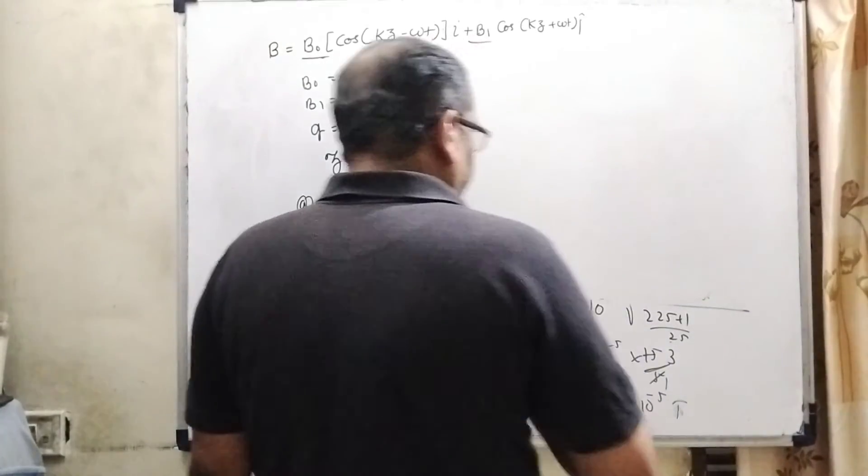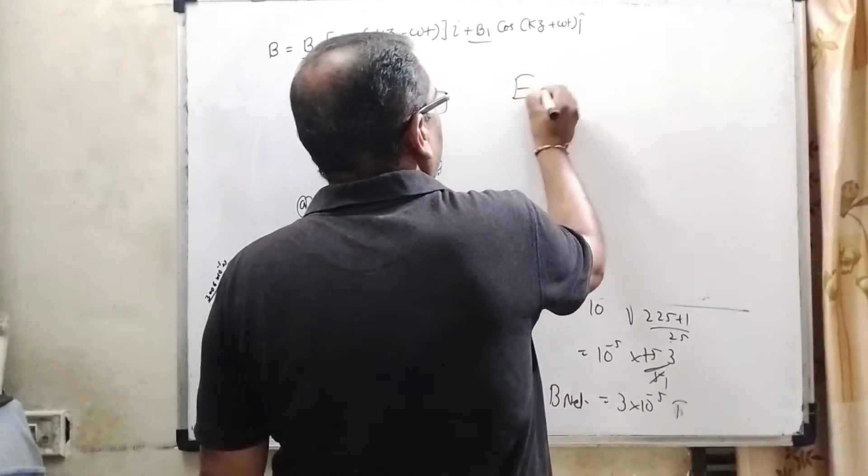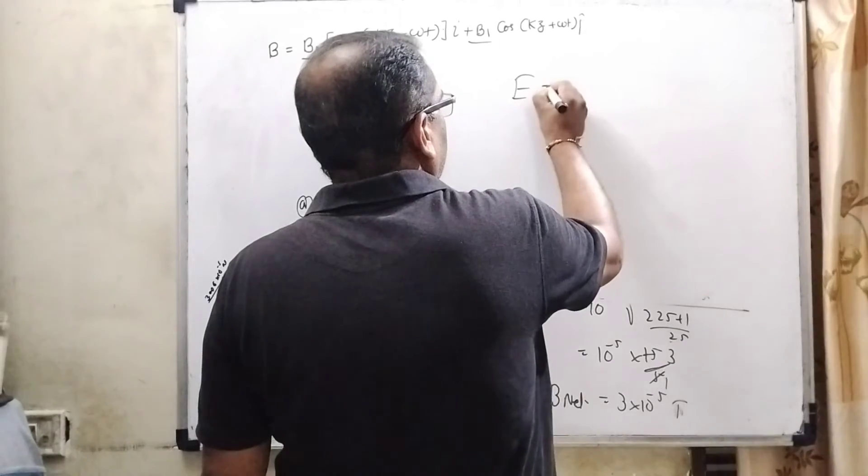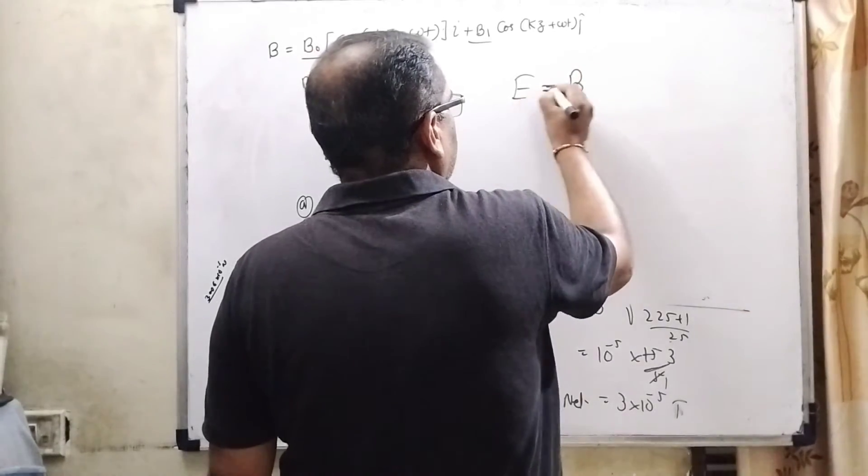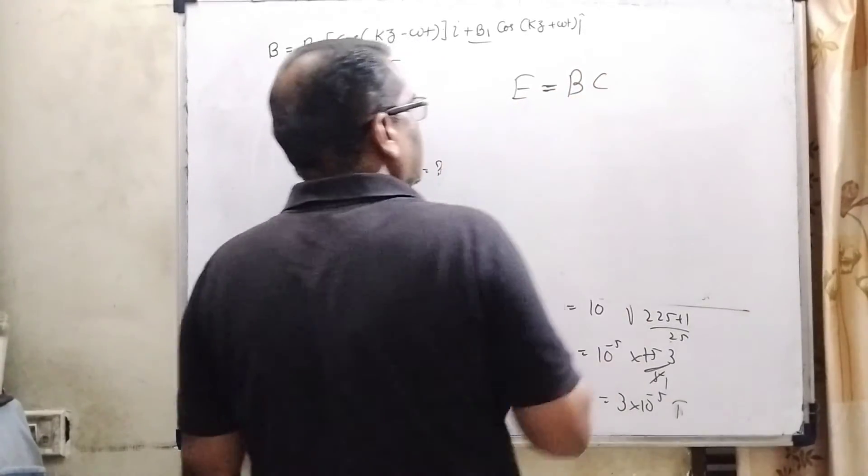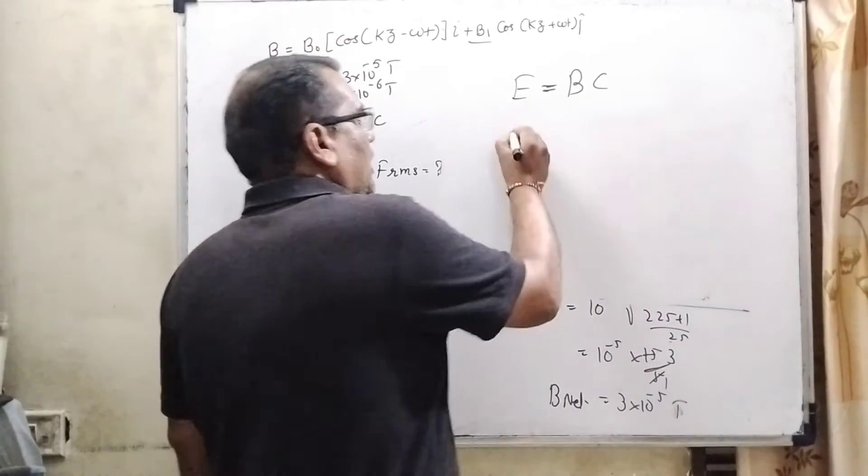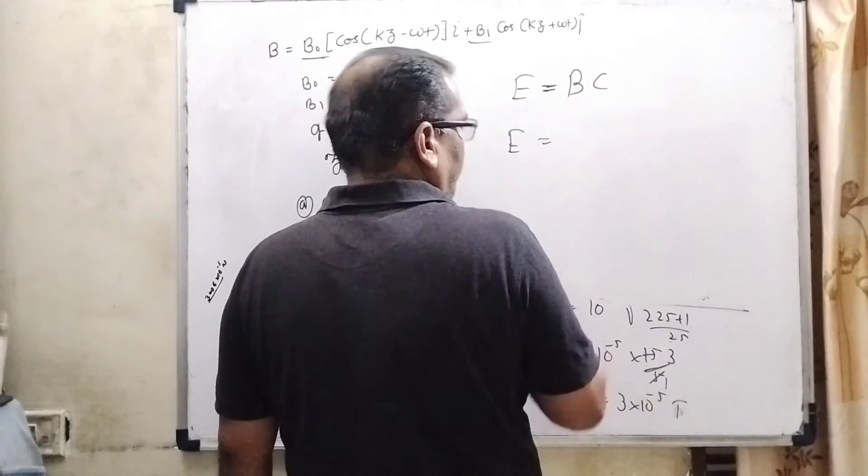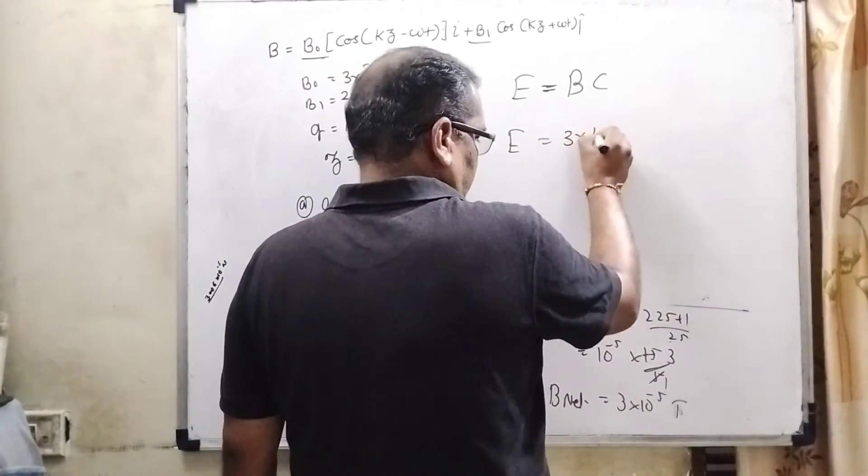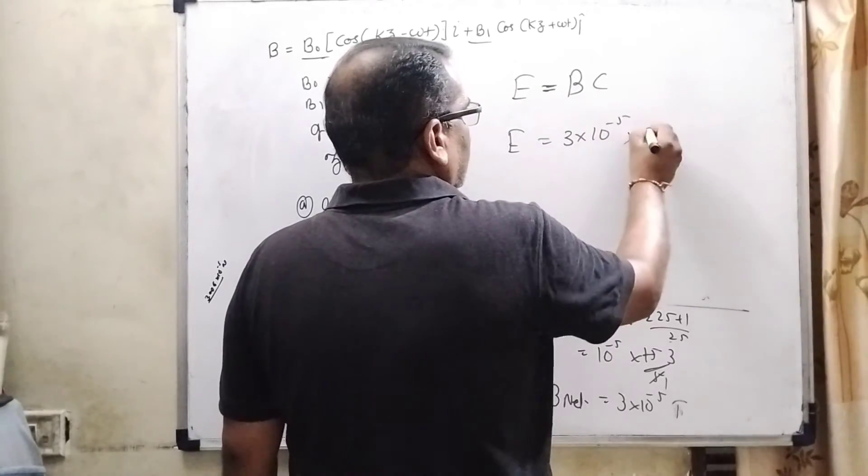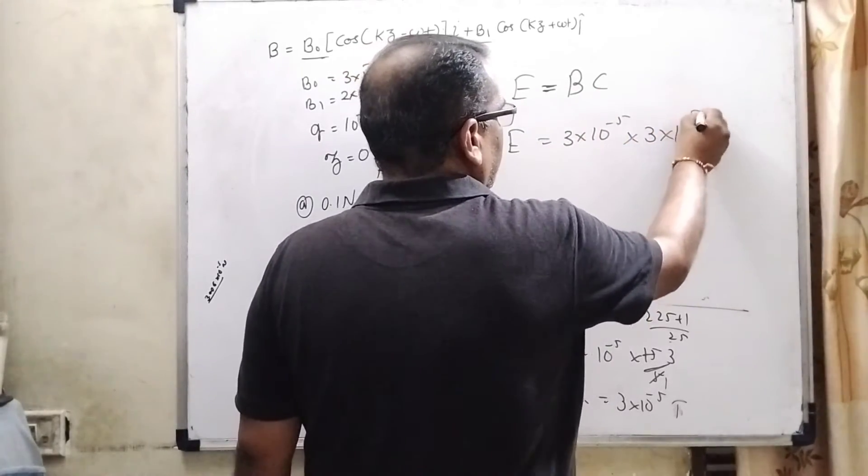Now, as per the relation between the electric field and magnetic field, that is E equal to B into C, where C is the speed of light. So now substitute the value of B, 3 into 10 to the power minus 5, and the speed of light, that is 3 into 10 to the power 8.